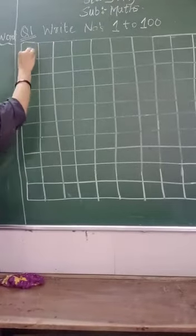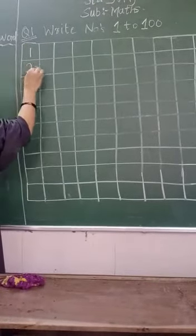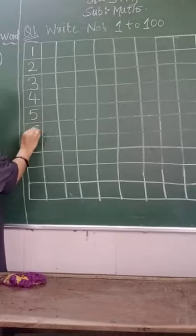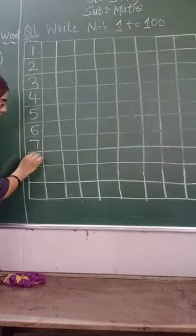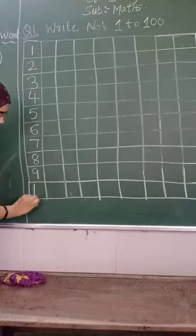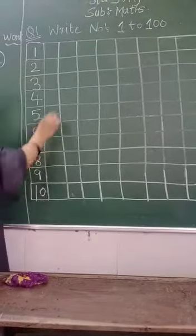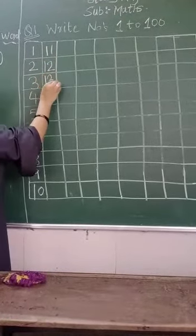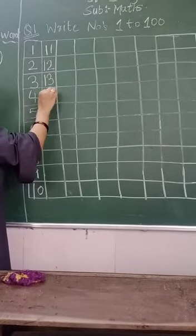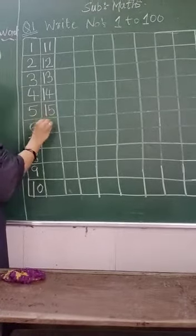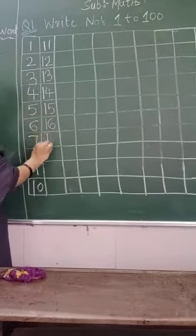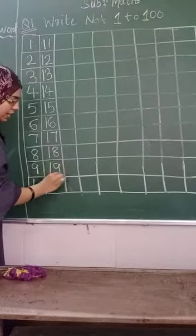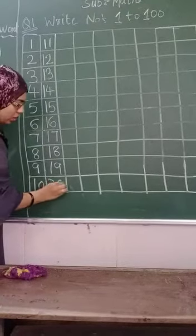Meri saat aapko ki gohi na. 1, 2, 3, 4, 5, 6, 7, 8, 9, 10. 1, 1, 11. 1, 2, 12. 1, 3, 13. 1, 4, 14. 1, 5, 15. 1, 6, 16. 1, 7, 17. 1, 8, 18. 1, 9, 19. 2, 0, 20.